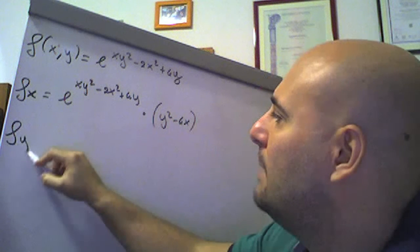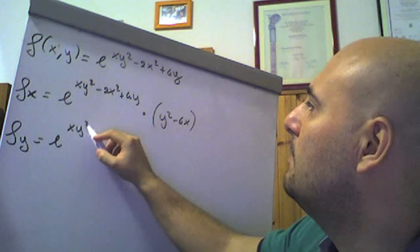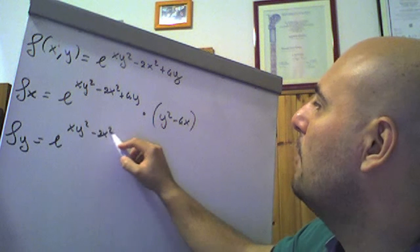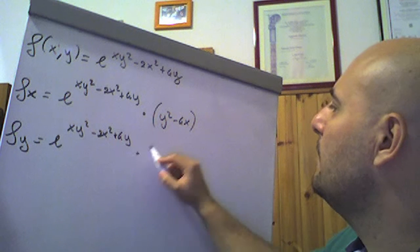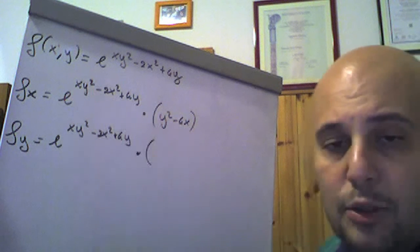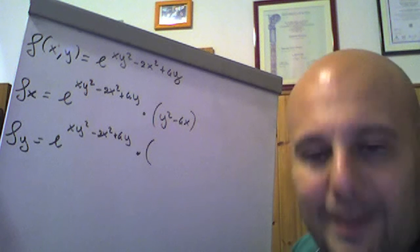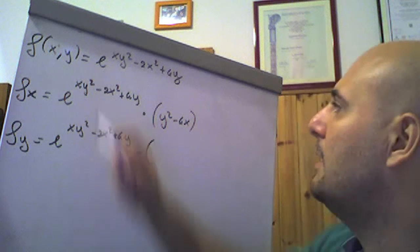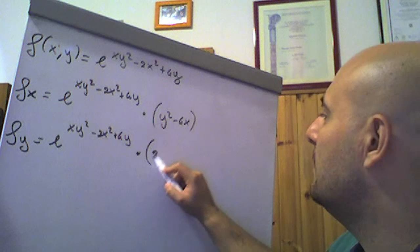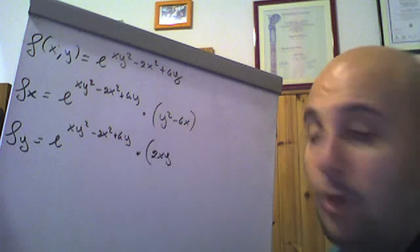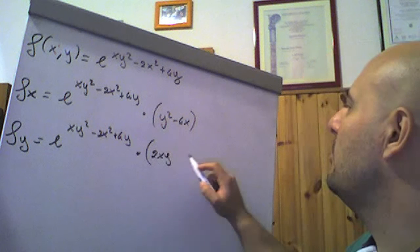Derivata parziale prima fatta rispetto ad y: è sempre e^(xy² - 2x² + 4y) che moltiplica. Questa volta la y è la variabile e la x è una costante. x sta fuori, derivata di y² è 2y, per x: 2xy. Meno 2x² evidentemente è 0 la sua derivata perché stiamo derivando rispetto ad y. Derivata di 4y è 4. Quindi f_y = e^(xy² - 2x² + 4y)·(2xy + 4).